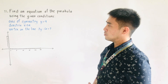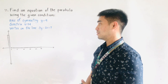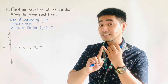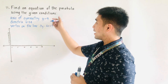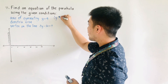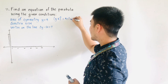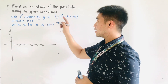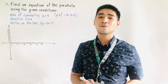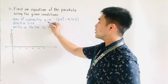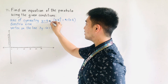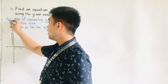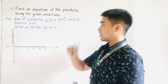We now have here condition number one: the axis of symmetry y is equal to 9. Remember that if we are given an axis of symmetry, it's either x or y. If we are given y, therefore the standard equation of the parabola is (y minus k) squared is equal to 4c times (x minus h). But if we are given x, therefore our equation is (x minus h) squared is equal to 4c times (y minus k). Since we are given y is equal to 9 as the axis of symmetry, this is now our standard equation.